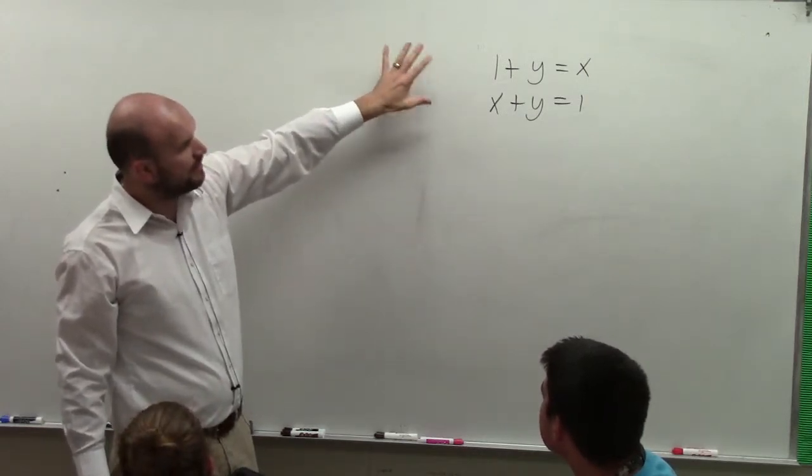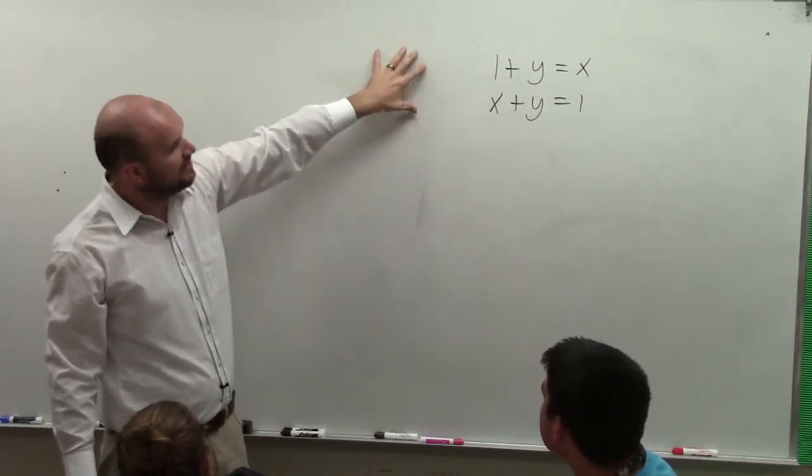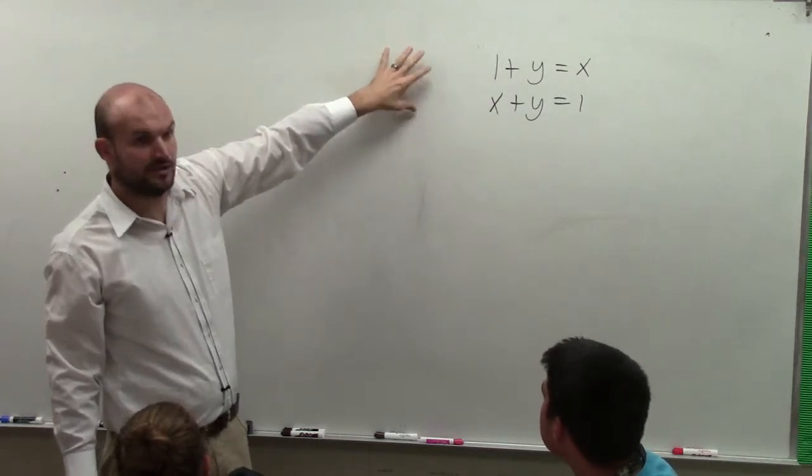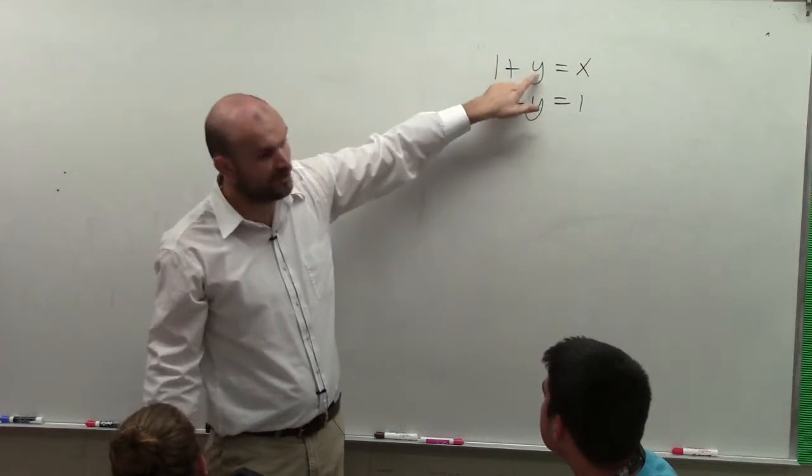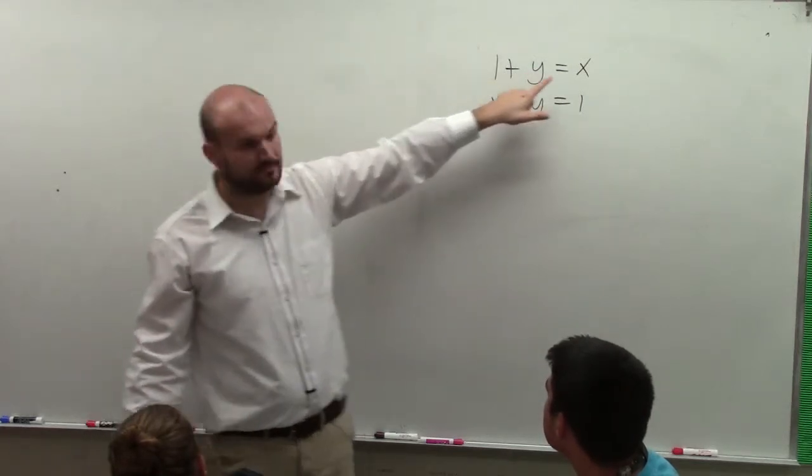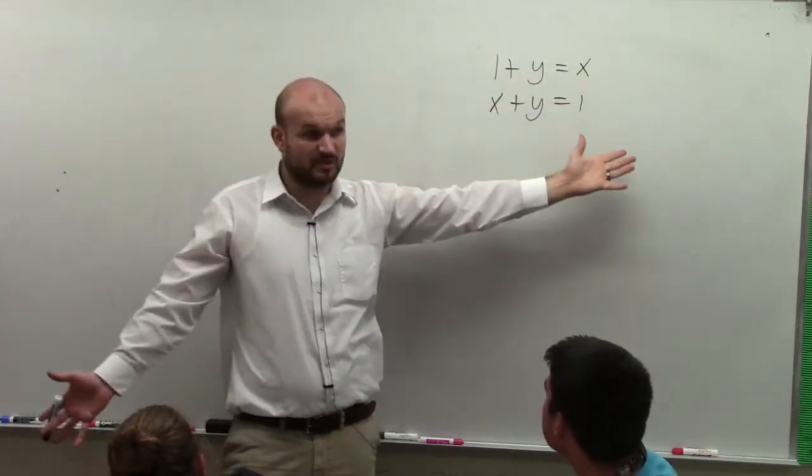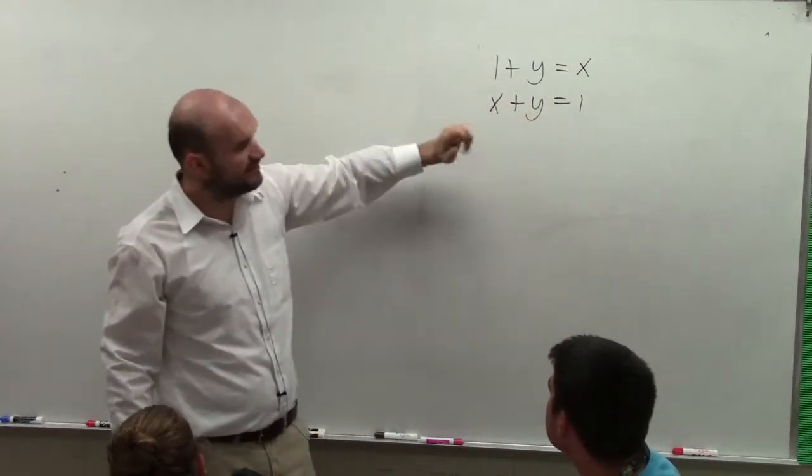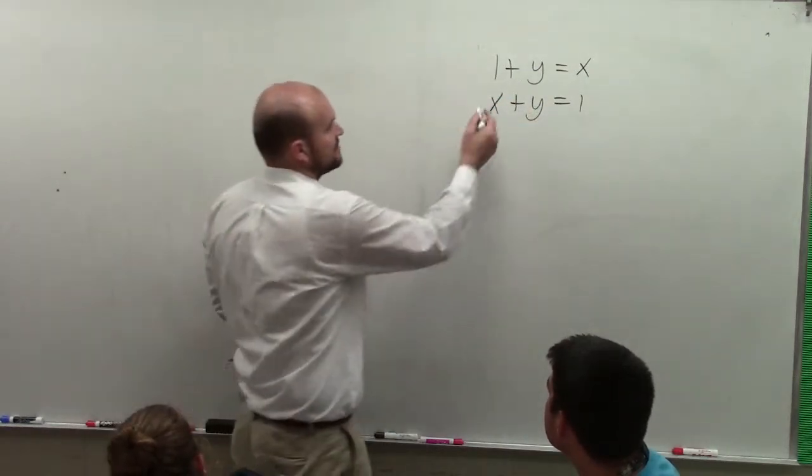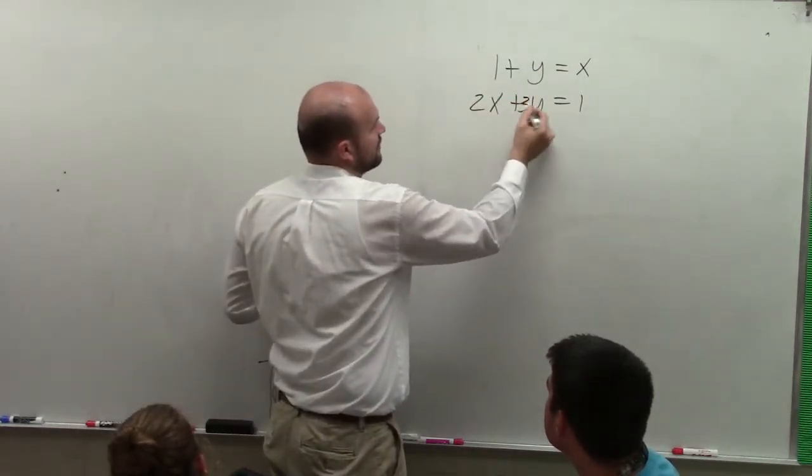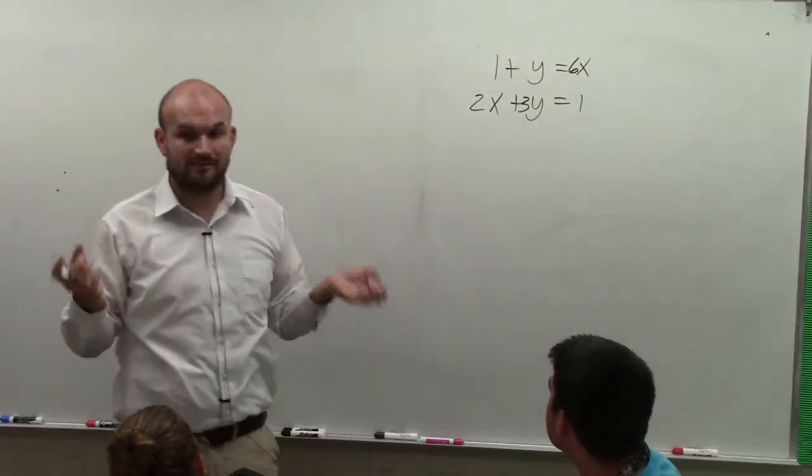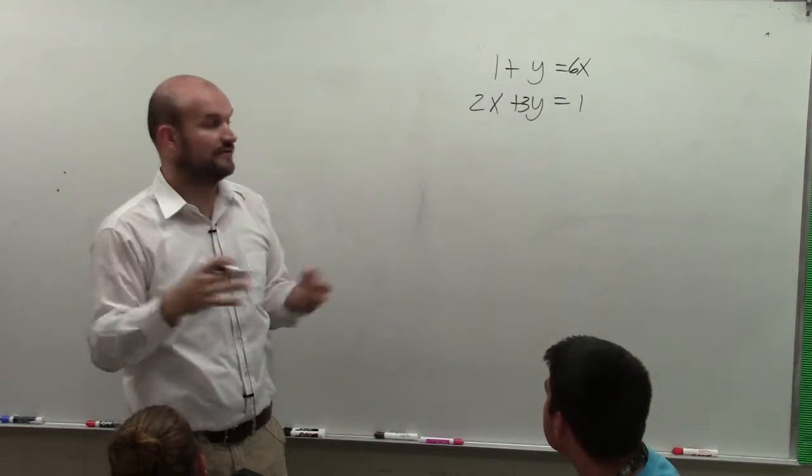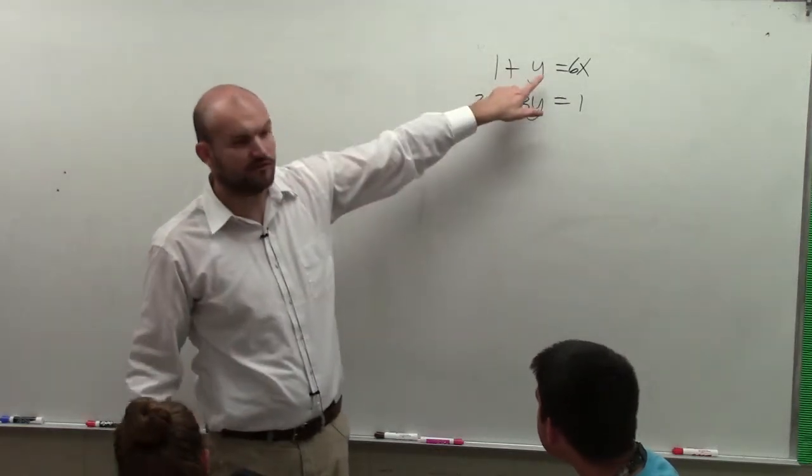When doing substitution, basically what we want to do is we want to identify a variable that has a coefficient of 1. And fortunately, in this problem that I chose, all of my variables have a coefficient of 1. So this one's pretty simple. However, that's not always going to be the case. Sometimes there will be like 2 here, 3 here, and like a 6 here or something. So therefore, if they had all those numbers in front, those coefficients that were not 1, then you'd want to solve for y.